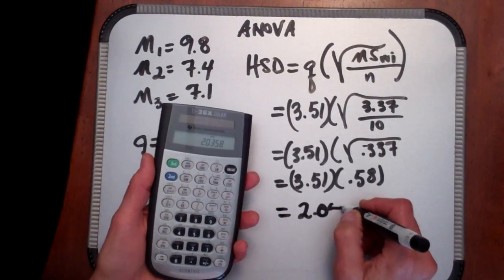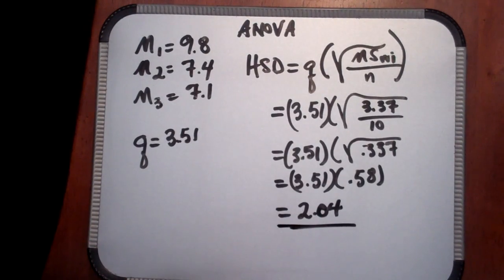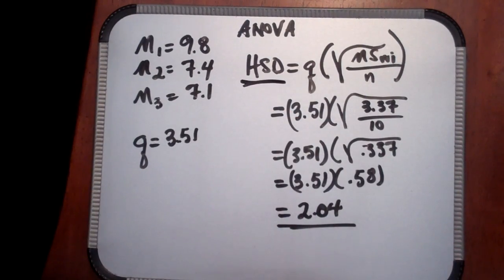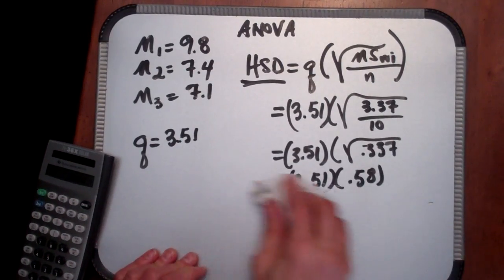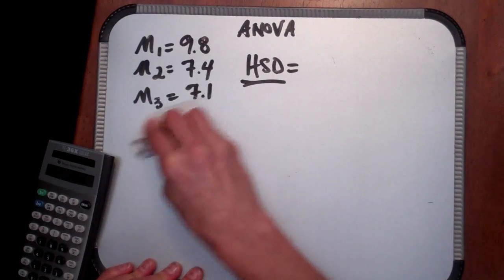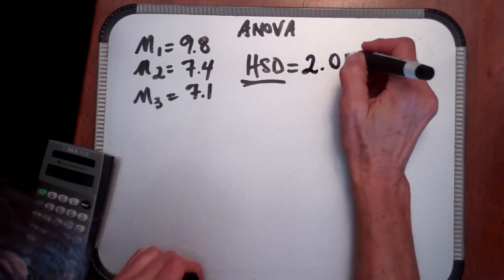And that's 2.04. We're going to round that to 2.04. So our HSD value for this example, HSD equals 2.04, and you'll see in just a second how we're going to use that.